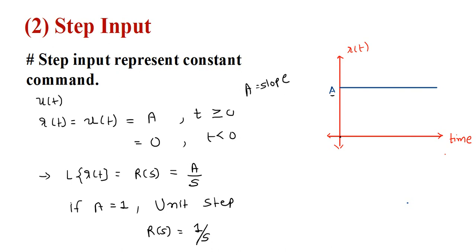In the frequency domain or s-domain, by taking the Laplace transform: Laplace of r(t) equals R(s) equal to a divided by s. If a is 1 it is called the unit step and is given by R(s) equal to 1 divided by s.